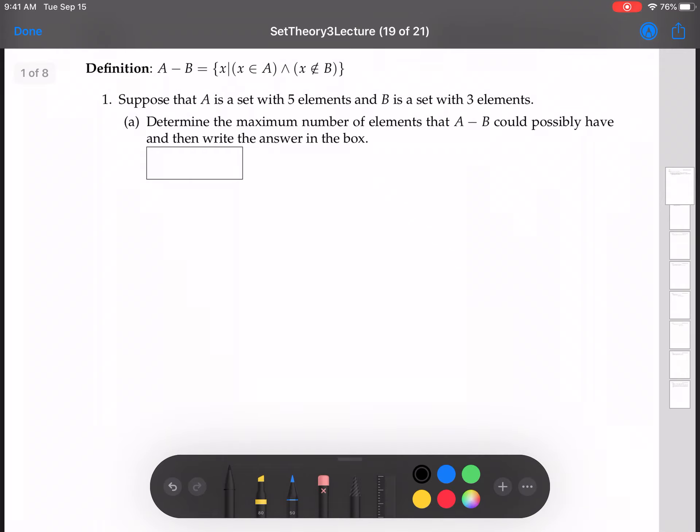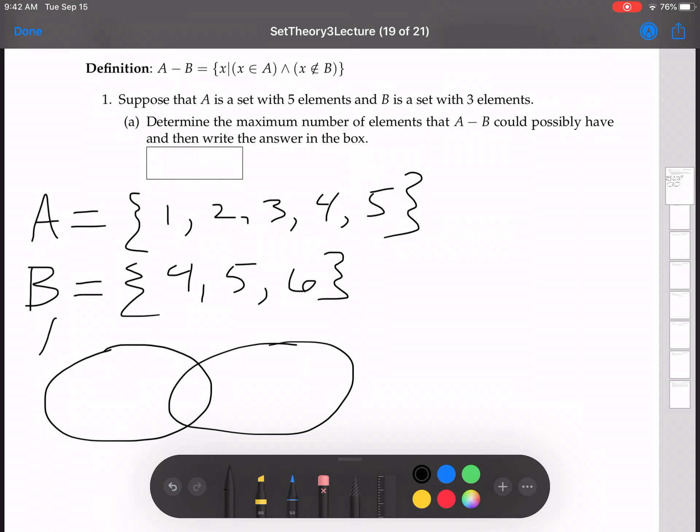Alright, so let's start with a set with five elements: 1, 2, 3, 4, 5. Say a set with three elements: let's say 4, 5, 6. You have A, you have B. 1, 2, 3, 4, 5, 6. Alright, let's make sure we've got all of our assumptions correct. Let's see, A has five elements - that's true. B has three elements - that's true.